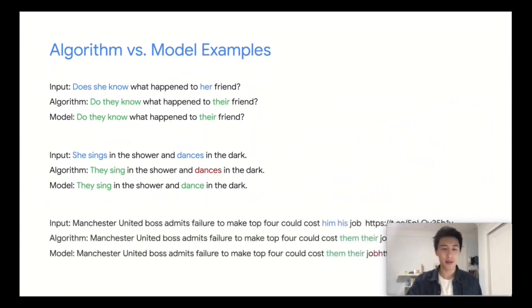In this last example, Manchester United boss admits failure to make top four could cost him his job and it's a Twitter link. The algorithm gets it correctly and rewrites him and his to be them and their. And so does the model. It's a little hard to see here, but the model incorrectly removes a white space.